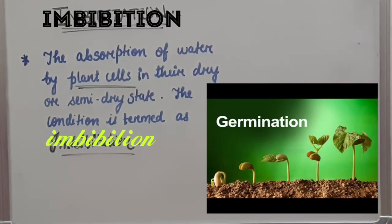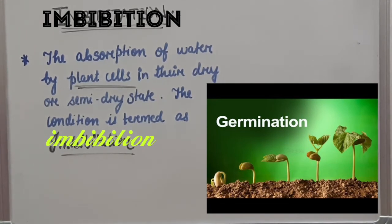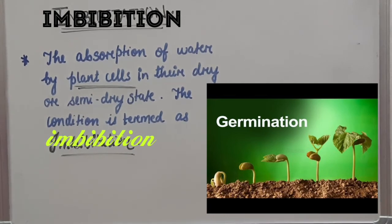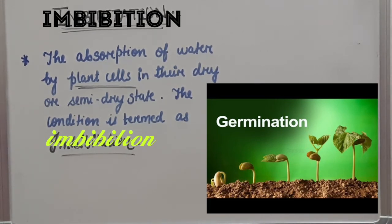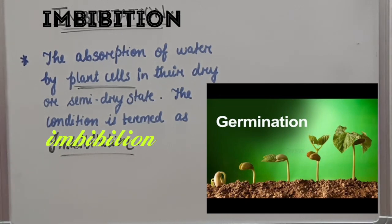When a dry seed is put in the soil and water is given to it, it slowly starts germinating and develops into a plant. This process mainly occurs because of imbibition. The condition is termed imbibition.